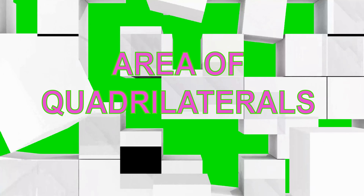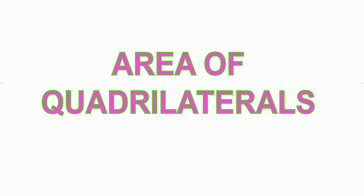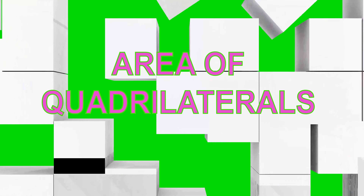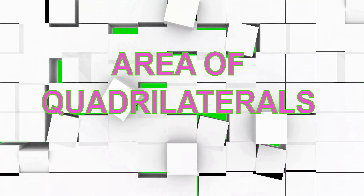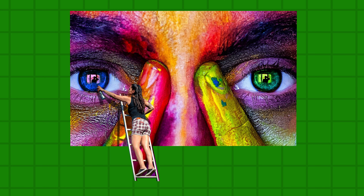G'day! Welcome to Accelerate Maths. Quadrilaterals are flat shapes with four straight sides, like rectangles and trapezoids. We need to calculate areas of quadrilaterals when we paint walls.